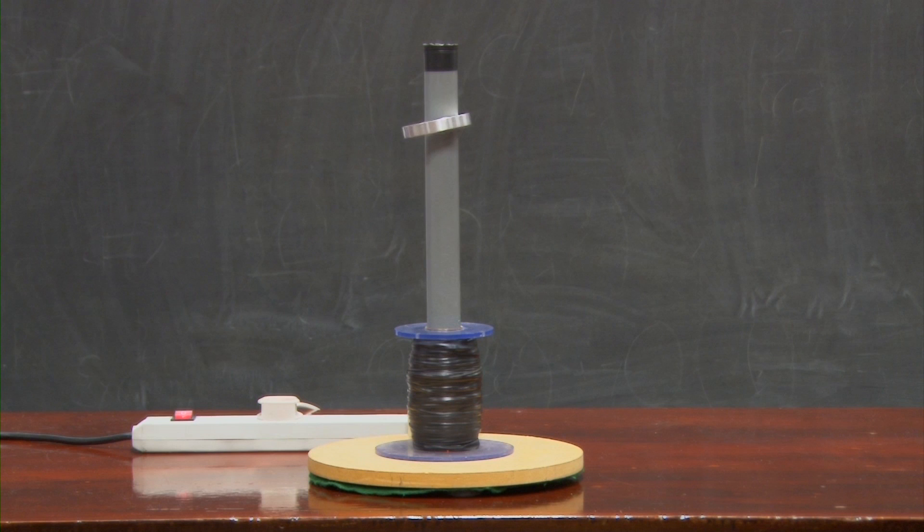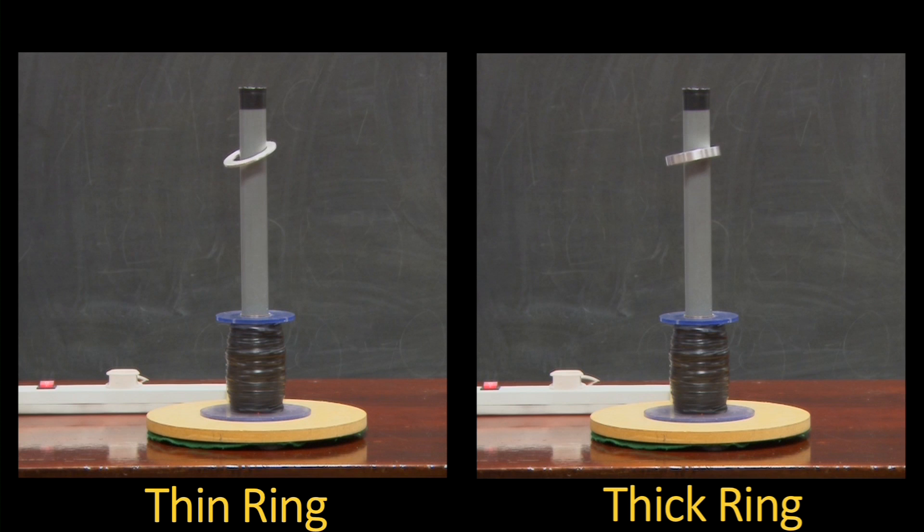The reason is once again related to the resistance of the ring. The greater cross-sectional area of the thicker ring gives it a lower resistance, and so the current induced in this ring is bigger than the induced current in the thinner ring.